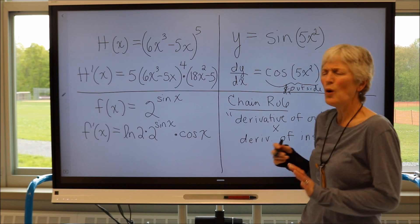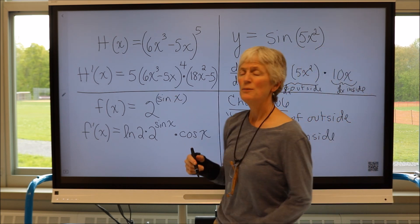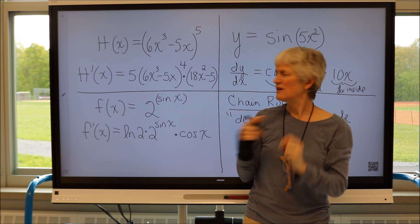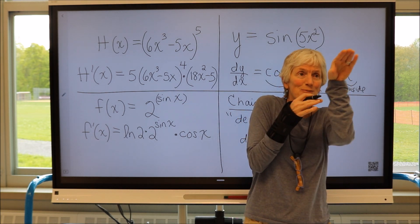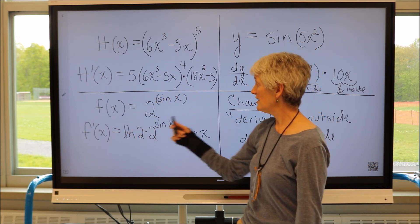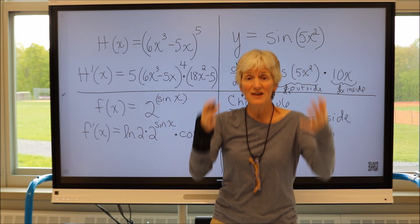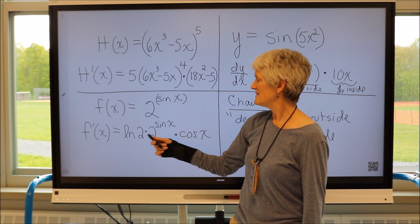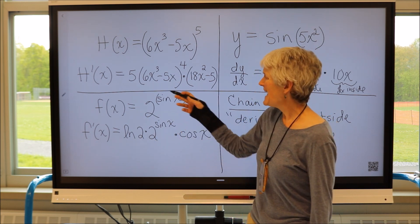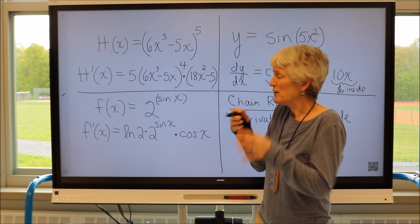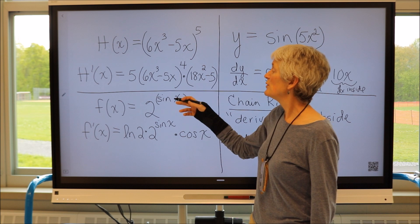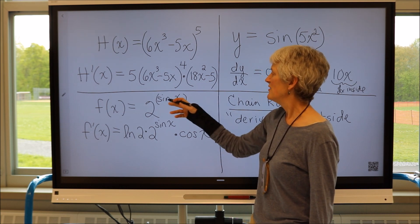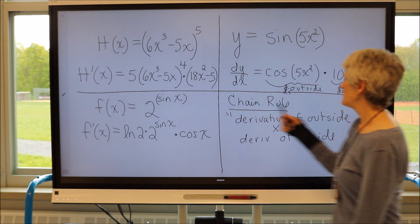Now with exponential functions, it's always a little weird to think outside and inside. But if you think of an exponential function, the exponent is the place where you can put things in — that's the input. So my outside function here is my exponential, my 2 raised to something. The derivative of an exponential function is the natural log of the base times that exponential function as it is. But now I put something into that exponent — that's my inside function. So the chain rule says I have to multiply the derivative of the outside times the derivative of that inside function. The derivative of the sine is cosine. That's the chain rule.